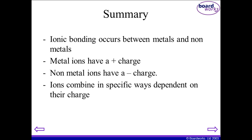In summary, ionic bonding occurs between metals and non-metals — metals on the left-hand side of the periodic table and non-metals on the right. Non-metal ions have a negative charge and metal ions have a positive charge, and they combine in specific ways depending on their charge. An example of this is magnesium chloride: magnesium ion has a 2+ charge, chlorine has a single negative charge, hence the formula produced is MgCl₂.